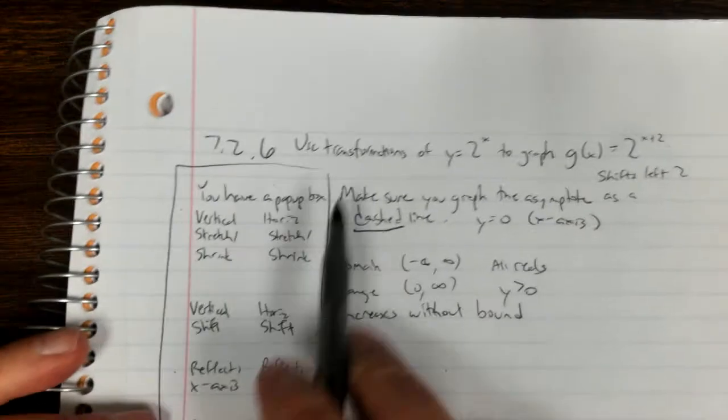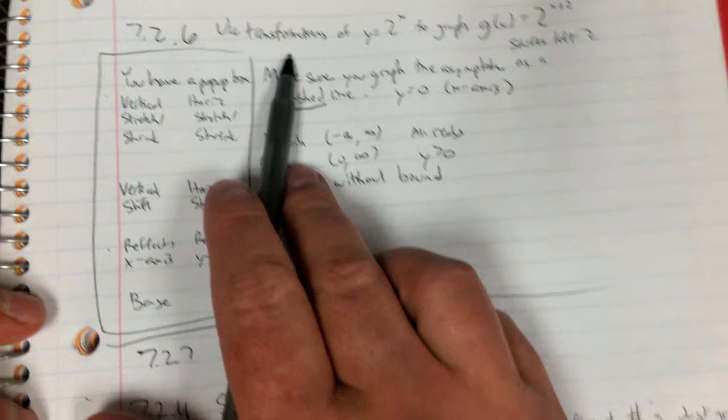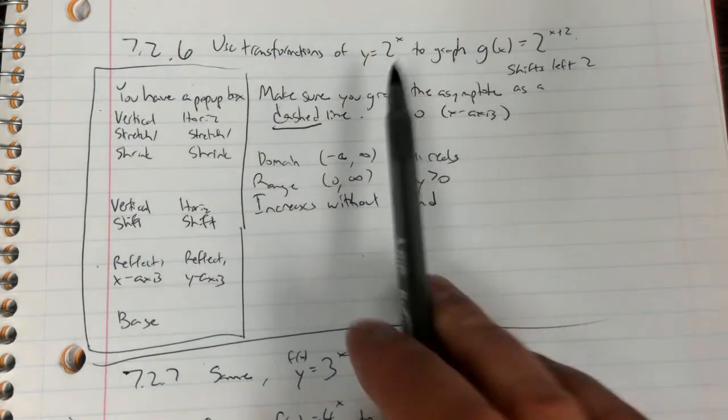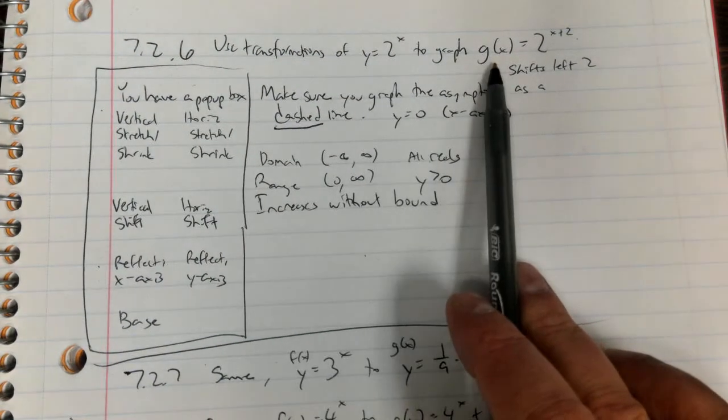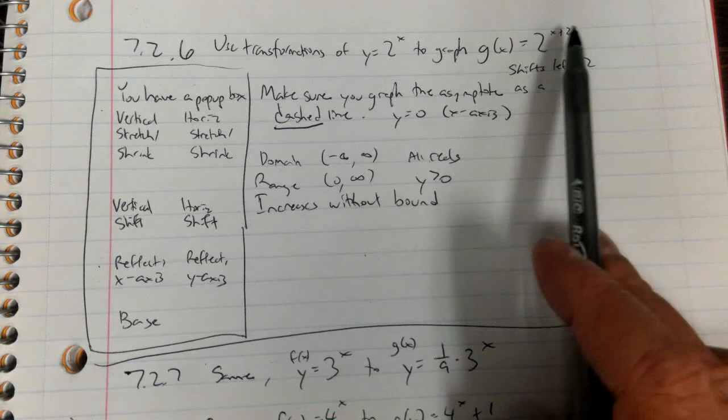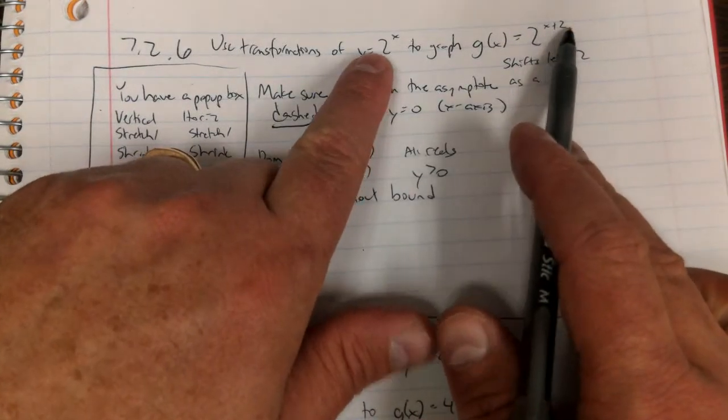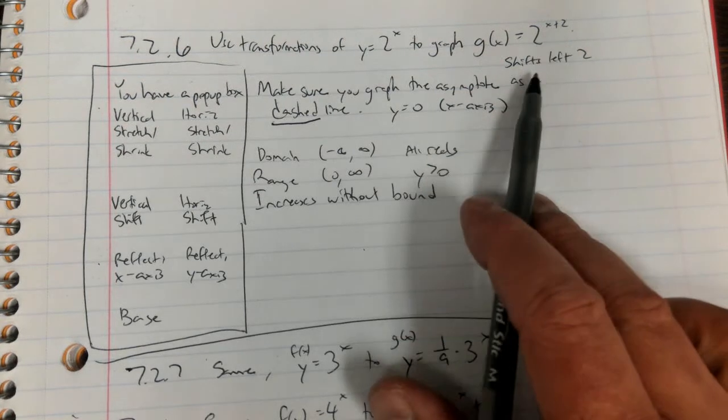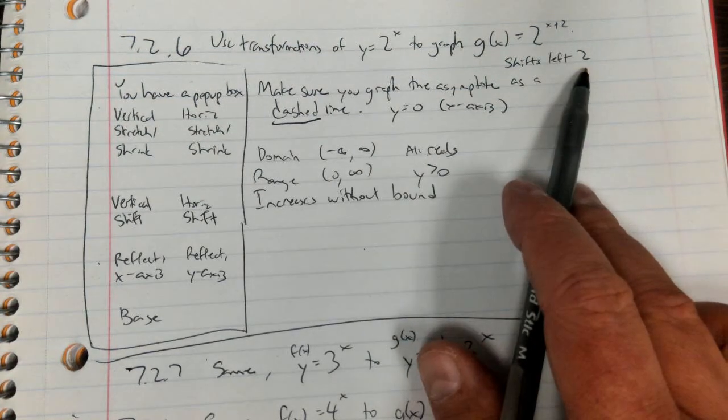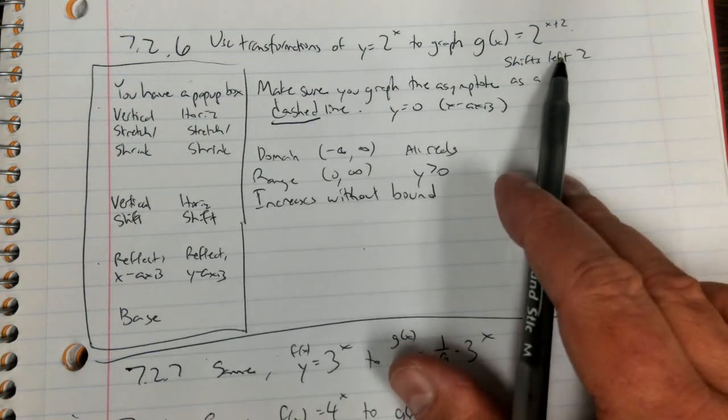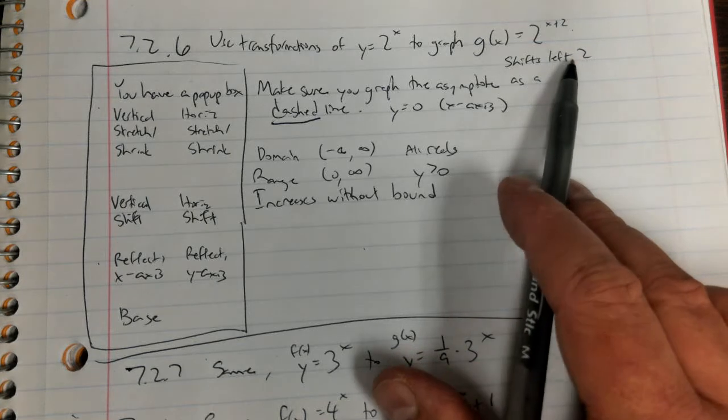On the next one, it says use transformations of y = 2^x to graph g(x) = 2^(x+2). Notice the difference between these is in your exponent, it has a plus 2 which shifts it left. If it were plus it'd go left, if it were minus it would go right.